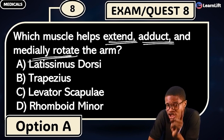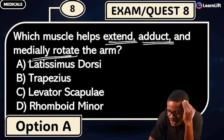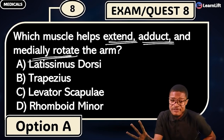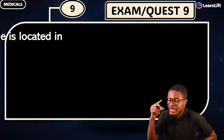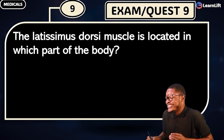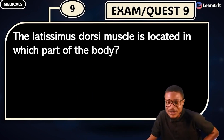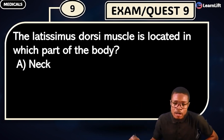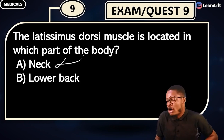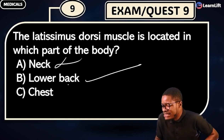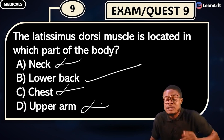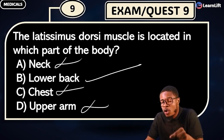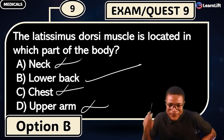Latissimus dorsi is the correct answer. When we look at these muscles part by part, I'll teach you everything about this muscle in detail. For now, know that the latissimus dorsi helps to extend, adduct, and medially rotate the arm around the humerus. Next question: the latissimus dorsi is located in which part of the body? Option A: neck — no. Option B: lower back — yes! Option C: chest — no. Option D: upper arm — no.